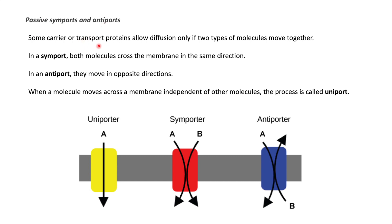There are terms like passive symports and antiports. Some carrier or transport proteins allow diffusion only if two types of molecules move together. In a symport, both molecules cross the membrane in the same direction — substance A requires substance B and vice versa; if either is missing, the other will not move inside the cell. In an antiport, if substance B moves out, substance A moves in. Uniporters are independent of other molecules.